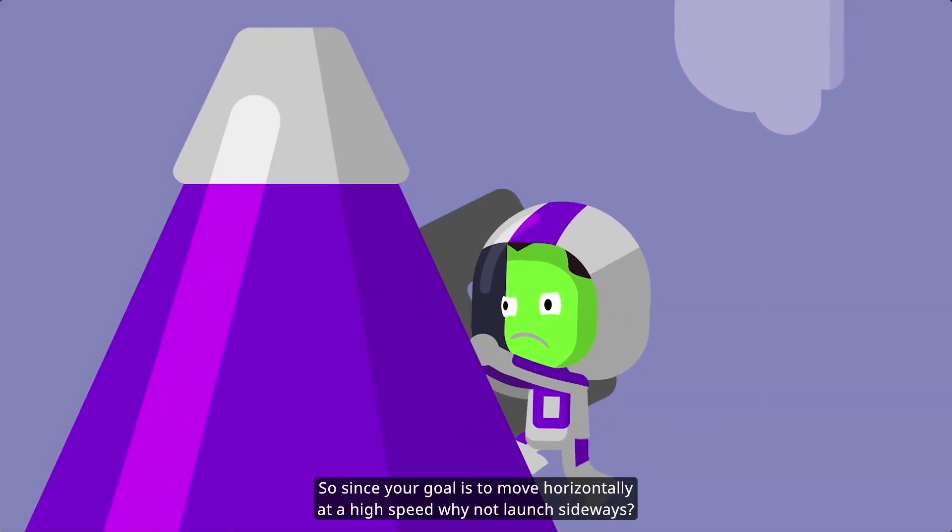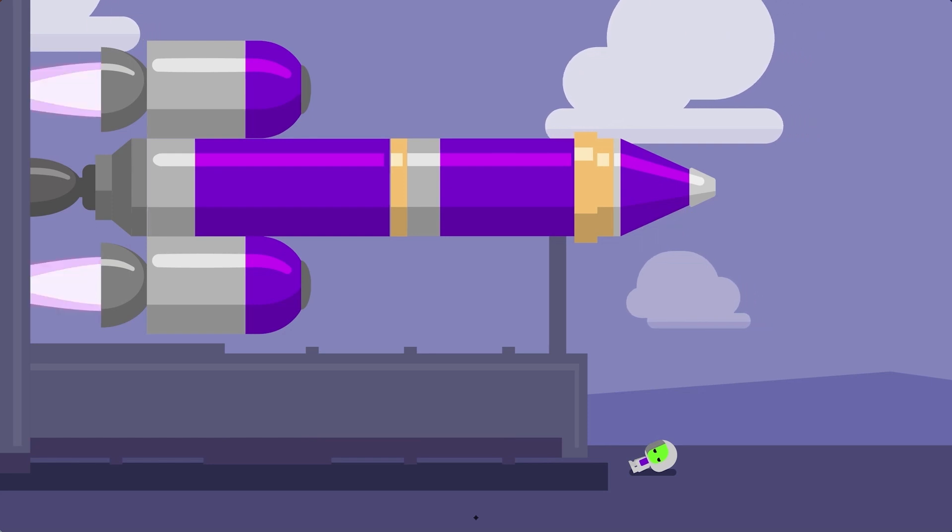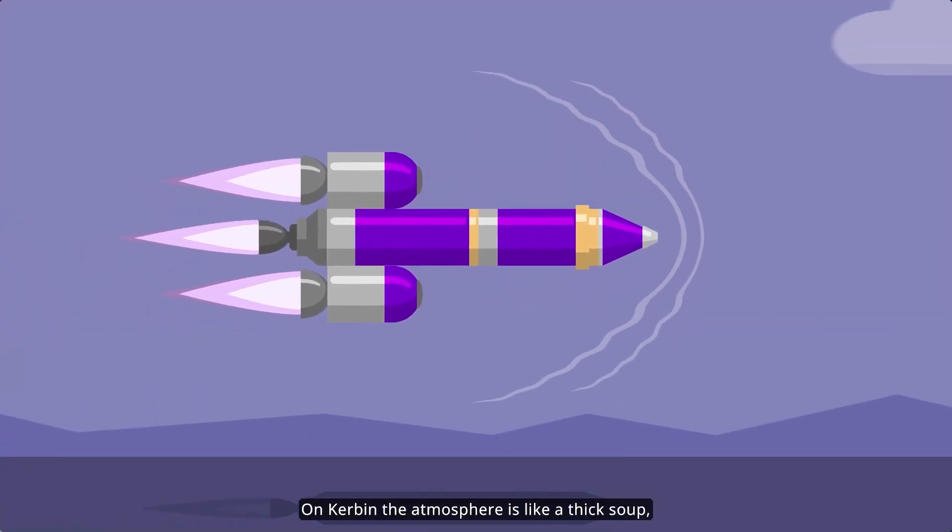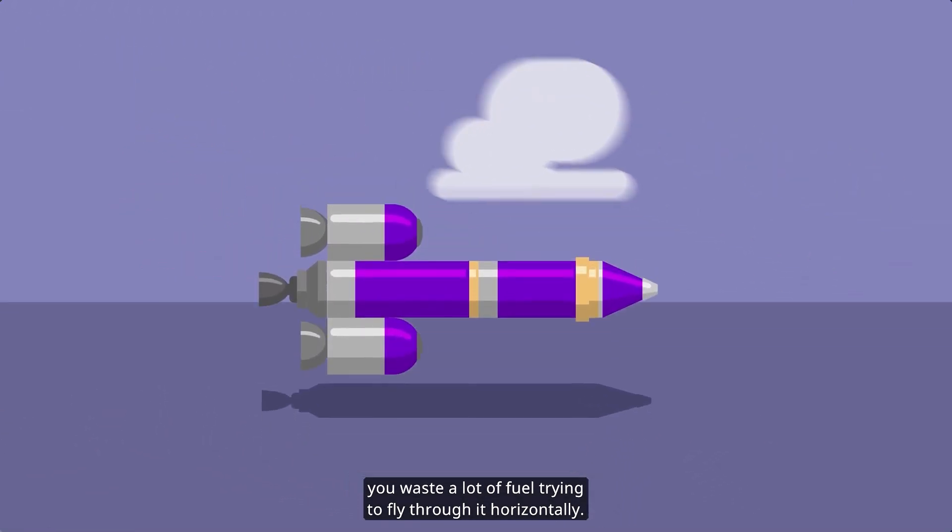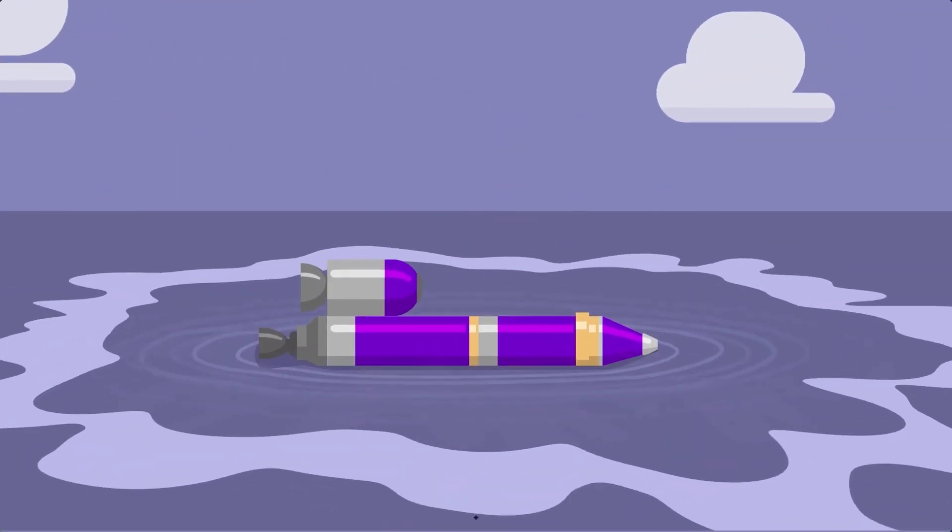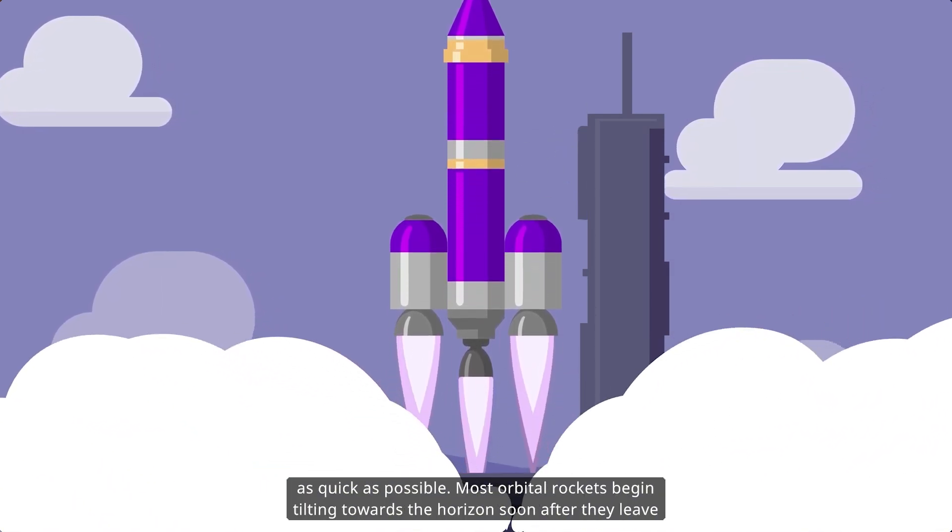So since your goal is to move horizontally at a high speed, why not launch sideways? On Kerbin, the atmosphere is like a thick soup. You waste a lot of fuel trying to fly through it horizontally. By launching vertically, you cut through the thickest part of the atmosphere as quickly as possible.